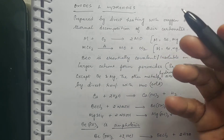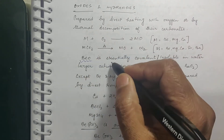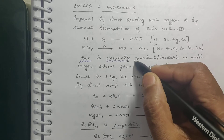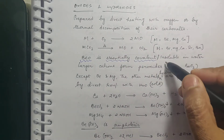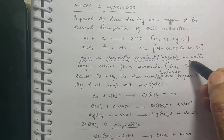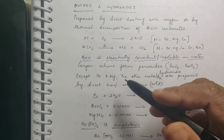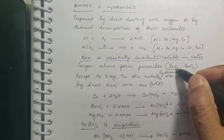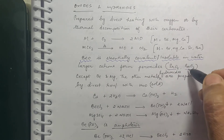BeO is essentially covalent, and because it is covalent it is insoluble in water. The larger cations form peroxides just like alkali metals — here also you will find peroxide formation: SrO2 and BaO2, which are strontium peroxide and barium peroxide respectively.